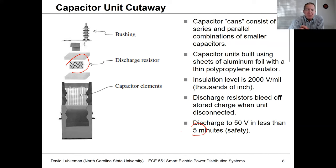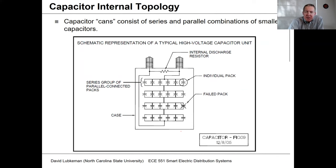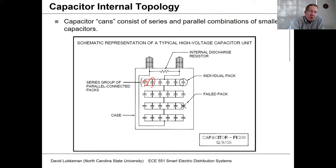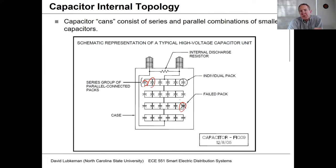Inside each can are miniature capacitances made of metallic foil arranged in various series and parallel combinations. One reason for this is fault tolerance — if there's an insulation failure somewhere, it doesn't take out the whole capacitor can, just causes a small loss of VAR support. This is how utility capacitors are actually constructed.